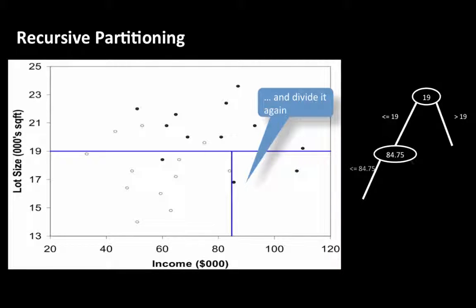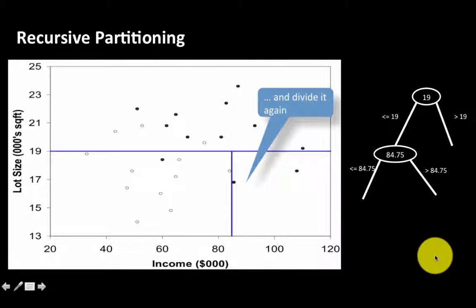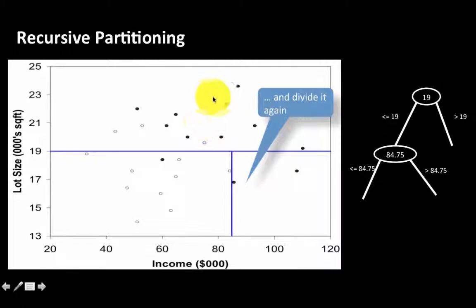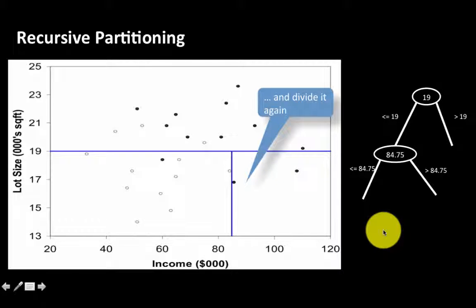This represents a division at income of 84.75. Cases less than or equal to 84.75 go to one side; those greater than 84.75 go to the other. Initially we started with an overall region of equal numbers of owners and non-owners. Now we have three regions: one predominantly owners, one predominantly non-owners, and one with only owners — completely pure. We now have three collections of cases which are much purer than the original.